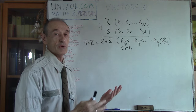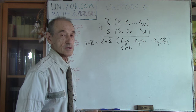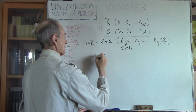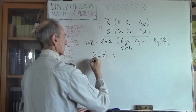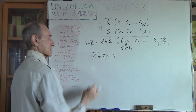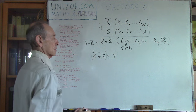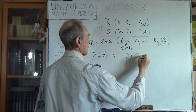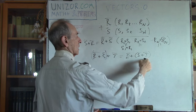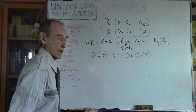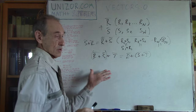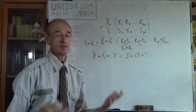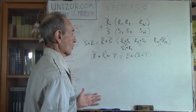Also, immediately following from the properties of real numbers, we have the associative law. So if you have r plus s plus t — three vectors — first you summarize r plus s and the result with vector t. It is exactly the same as if you first do s plus t, then r plus that result. This associative law immediately follows from the corresponding law for real numbers.